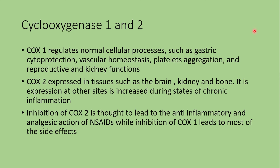The cyclooxygenase enzyme 1 regulates normal cellular processes such as gastric cytoprotection, vascular hemostasis, platelet aggregation, and reproductive and kidney functions. The cyclooxygenase enzyme 2 is expressed in tissues such as the brain, kidney, and bone, and its expression at other sites is increased during states of chronic inflammation. Inhibition of COX-2 is thought to lead to the anti-inflammatory and analgesic action of NSAIDs, while inhibition of COX-1 leads to most of the side effects.